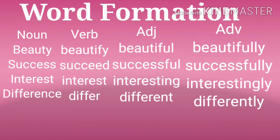The first category is noun. In the noun category, the first word given is 'beauty.' If we want to change this noun into a verb, it becomes 'beautify.' If we change the verb 'beautify' into an adjective, it becomes 'beautiful.' When we change the word 'beauty' into an adverb, it becomes 'beautifully.' This means that as per the category of the word, the word changes its form.